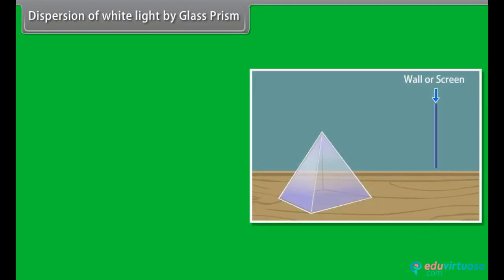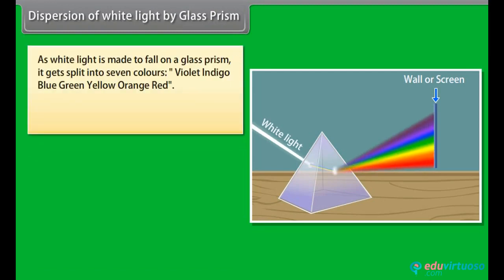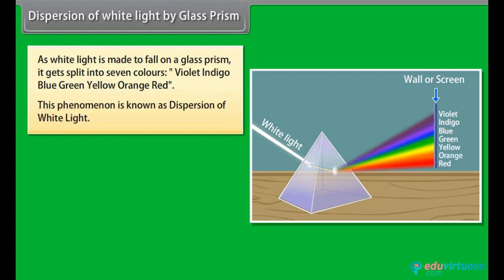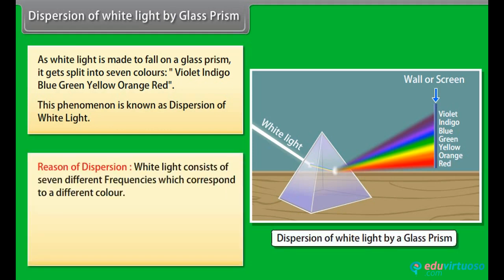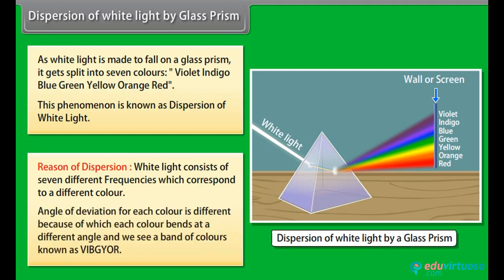Dispersion of White Light by a Glass Prism: When white light is made to fall on a glass prism, it gets split into seven colors — violet, indigo, blue, green, yellow, orange, and red. This phenomenon is known as dispersion of white light. White light consists of seven different frequencies, each corresponding to a different color. The angle of deviation for each color is different, because of which each color bends at a different angle and we see a band of colors known as VIBGYOR.